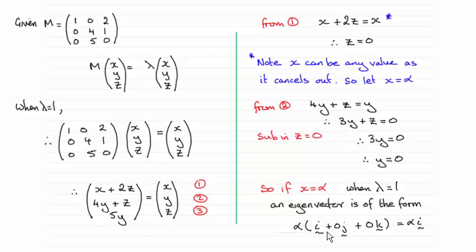How did I get this? Well, we're given the matrix M, and we know that for any eigenvector with its associated eigenvalue, M times the eigenvector should equal the eigenvalue times the eigenvector. So setting lambda equal to 1,